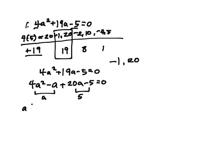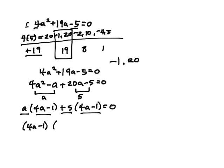So when I factor out an a, I end up with 4a minus 1 plus 5 here, and that's a 4a minus 1. Here I am going to factor out a 4a minus 1, and what I'm left with is an a and a plus 5.